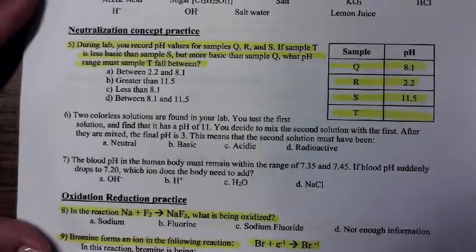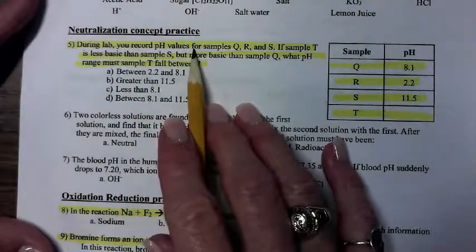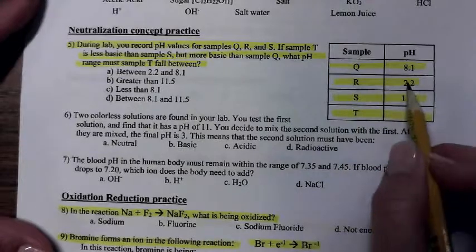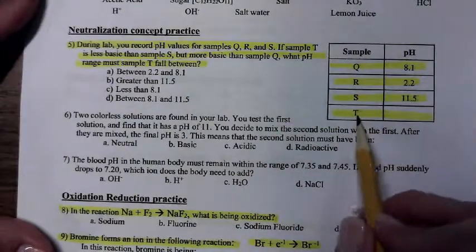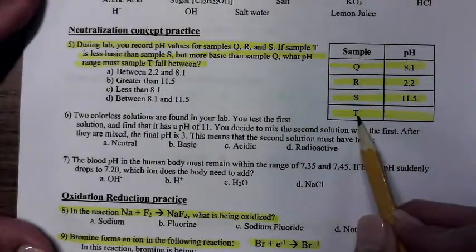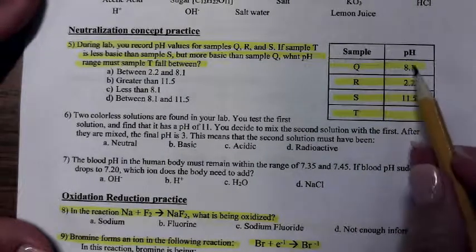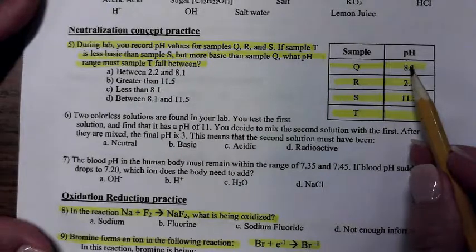Number five. During lab, you record pH values for samples Q, R, and S. There's Q, R, and S. If sample T is less basic than sample S, but more basic than sample Q, what pH range must T fall between?